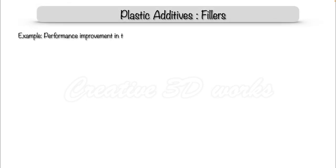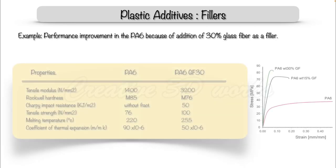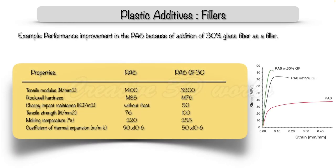Let's see an example of filler performance: the performance improvement of PA6 because of the addition of 30 percent glass fiber as a filler. We can see here the mechanical property improvements shown in the data.